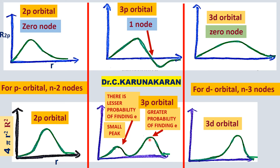There are two peaks in the plot — one small peak and one large peak. There is a lesser probability of finding the electron at the smaller peak, and a greater — in fact the maximum — probability of finding the electron at the larger peak at that radial distance.